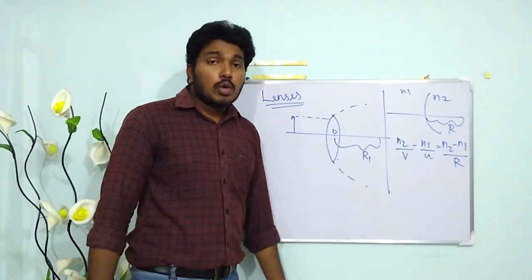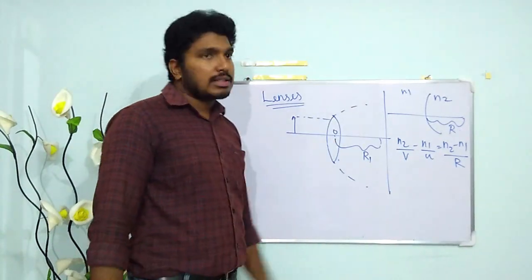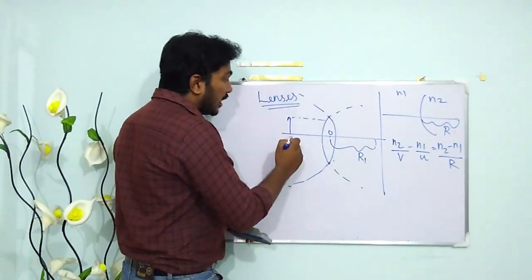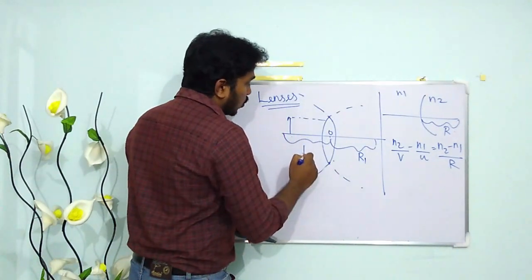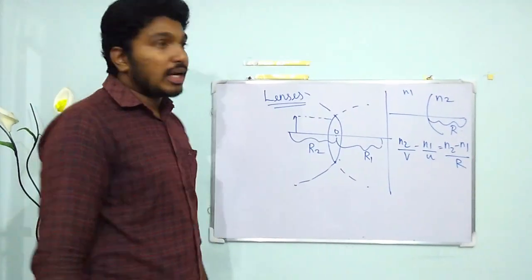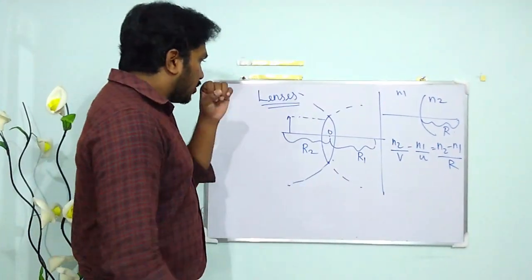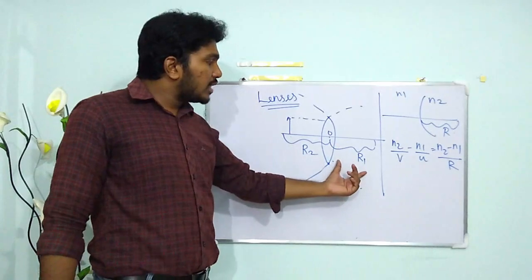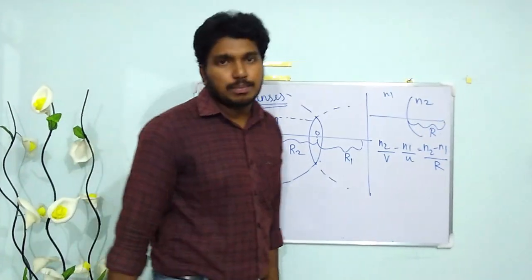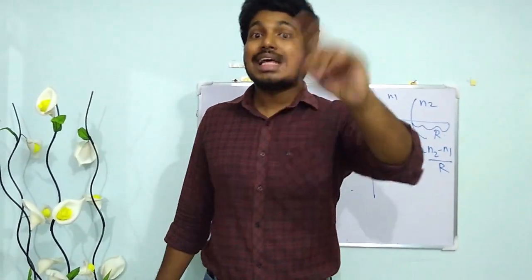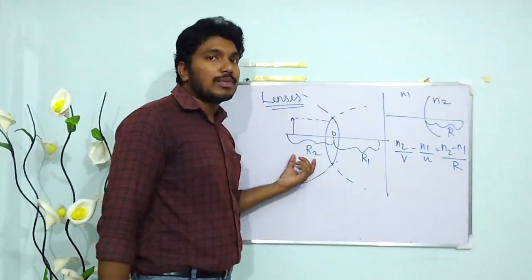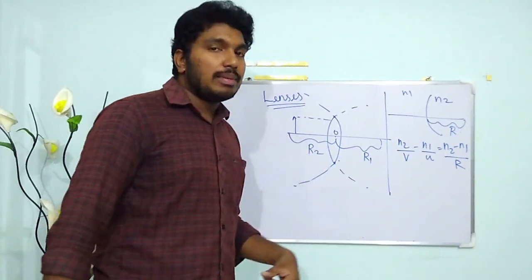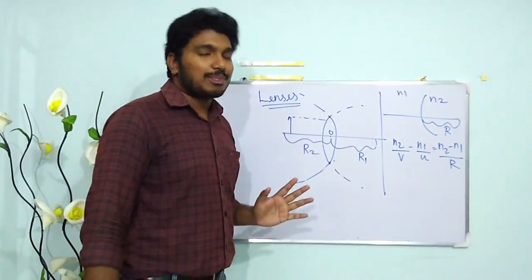For the first spherical surface we define R1, and for the second refracting surface we define R2. R1 is on the right side, so it is positive. R2 is on the left side, so it is negative.